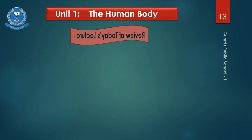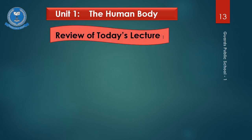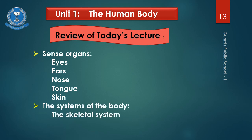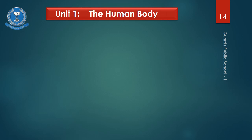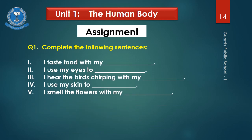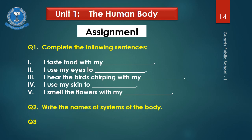Now it's time for a review of today's lecture. Today we have covered these topics: sense organs — eyes, ears, nose, tongue and skin — and we talked about their functions. We have also covered the names of the systems of the body, and the skeletal system and the muscular system in detail. After watching and listening to the video, you have to do this assignment. Question number one: complete the following sentences by writing the correct sense word in the blanks. Question number two: write the names of systems of the body. Question number three: write the names of any five bones of the skeletal system.